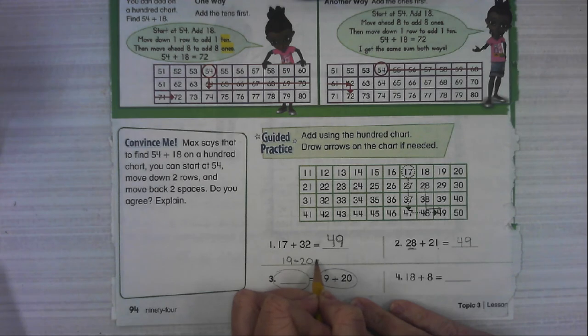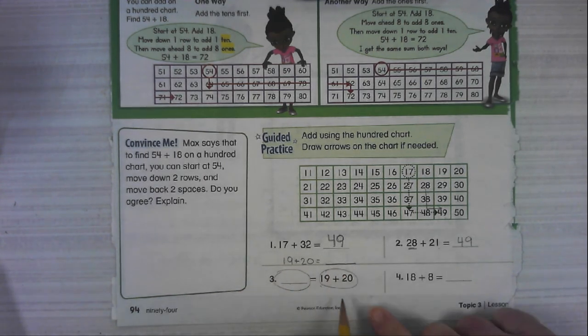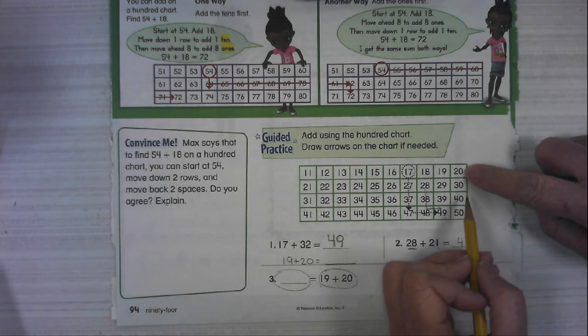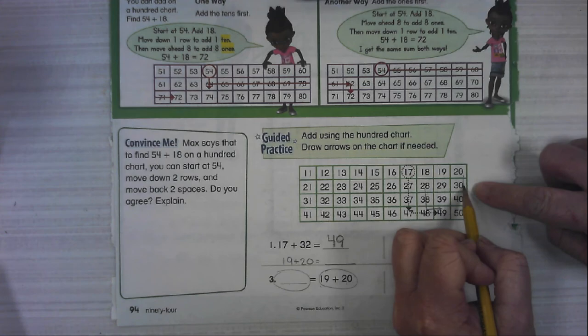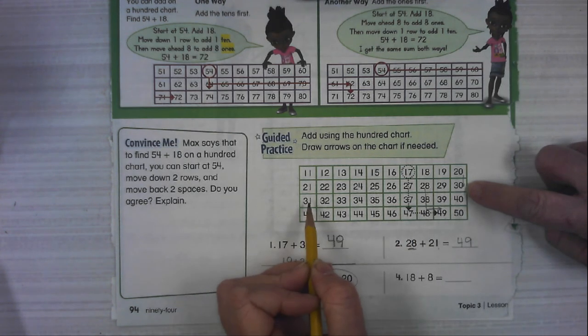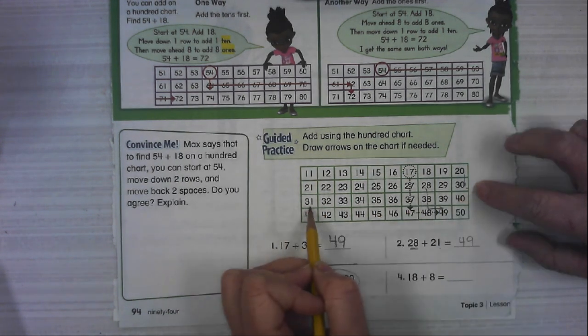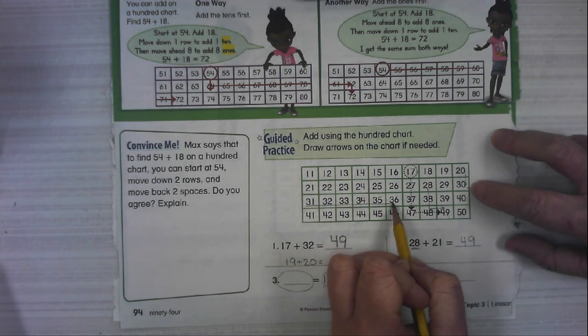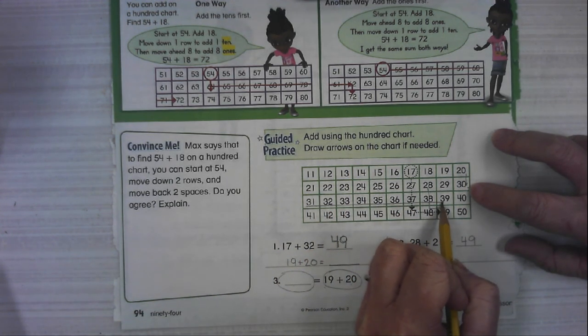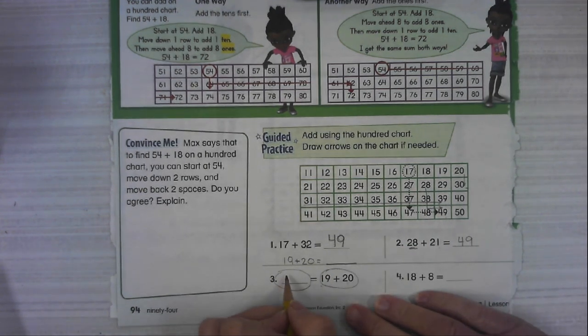Let's start at 20 and go down a 10 to 30. And then go over 9 ones. 1, 2, 3, 4, 5, 6, 7, 8, 9. What did we get? 39.